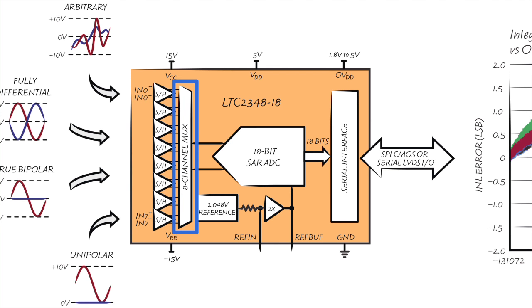An internal multiplexer then sequentially transfers the samples to a shared high performance SAR ADC, which digitizes them to 18-bit resolution. Once all samples have been digitized, the conversion results are available via a pin-selectable SPI CMOS or serial LVDS interface.